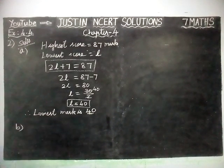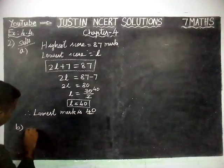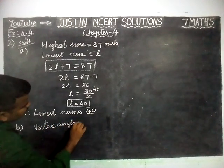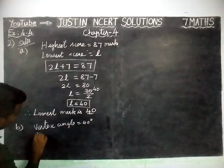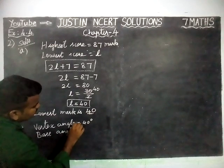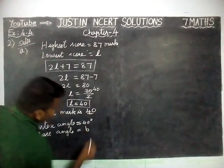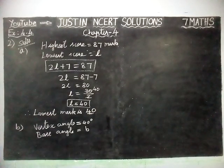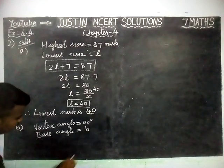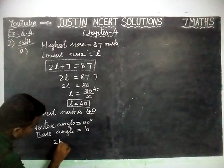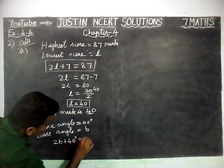In an isosceles triangle, the base angles are equal. The vertex angle is 40 degrees. We are going to take the vertex angle equal to 40 degrees. We don't know the base angle, so we are going to take it as B. Since both base angles are equal in an isosceles triangle, the sum of the angles of a triangle equals 180 degrees. Substituting: 2B plus 40 degrees is equal to 180 degrees. This is the required equation.